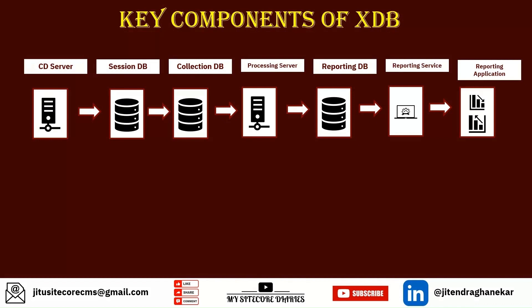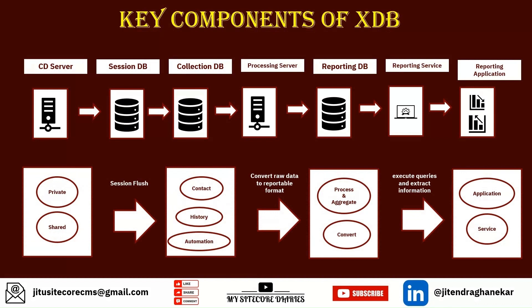Overall, whenever the customer is interacting with your website, that data gets stored in the session. There are two types of sessions — private and shared — which we will cover later. Once the session is flushed, it gets stored in the collection DB as contact history, automation, and similar data. That raw data then gets converted into a reportable format by processing and aggregating, and is stored in the reporting DB.